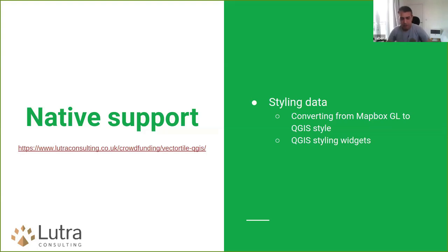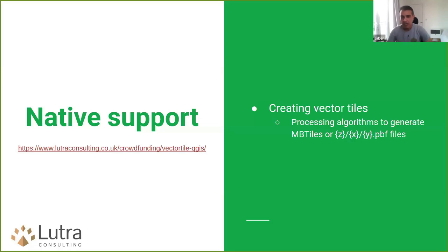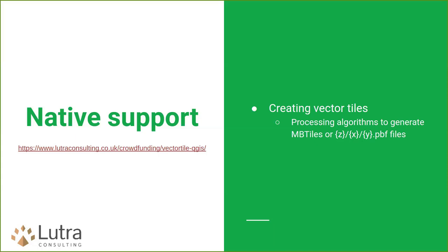That conversion script has been further developed and extended by our friends at MapTiler, so now you have a good toolset to convert Mapbox GL to QGIS style as part of their plugin. Once you have that as a starting point, there are tools in QGIS to style the data, add filters, apply different colors, or set labels similar to how you would style vectors. We also added vector tile algorithms in the processing toolbox to create vector tiles directly from loaded layers in QGIS.